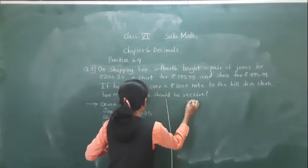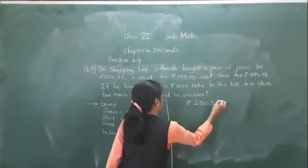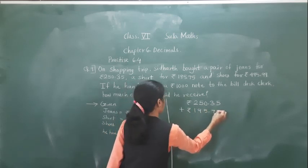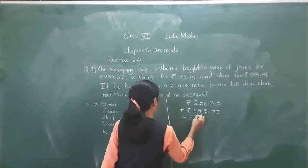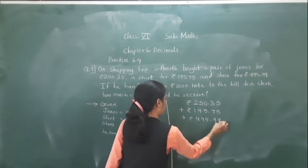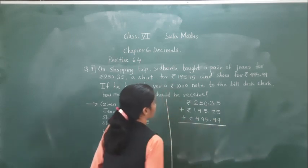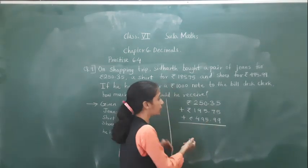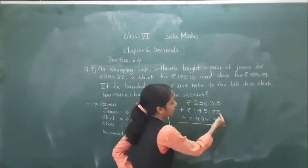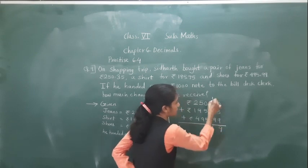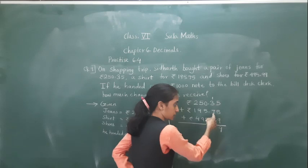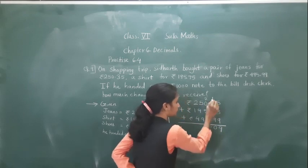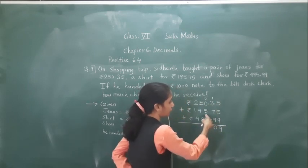So we will add these things to find how much we have to pay to the shopkeeper. 5 plus 5 is 10, 10 plus 9 is 19 — 1 is carried. 9 plus 7 is 16, 16 plus 3 is 19, 19 plus 1 is 20 — 2 is carried. 5 plus 5 is 10, 10 plus 2 is 12 — 1 is carried.